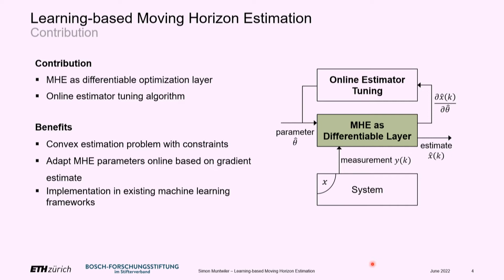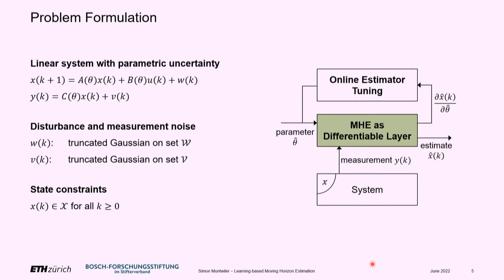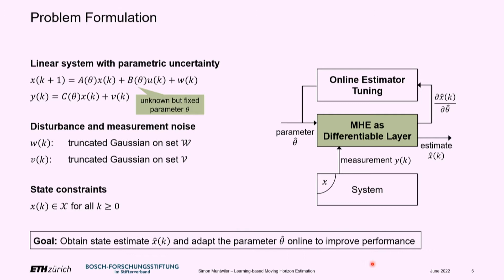In our specific setting, we consider a linear system subject to unknown parameters in the system dynamics. We assume that disturbances and measurement noise are distributed according to truncated Gaussians, and that there is some prior knowledge on the states in the form of a constraint that is always satisfied. The goal is to obtain a state estimate while simultaneously adapting the parameter within our estimator online to improve estimator performance.